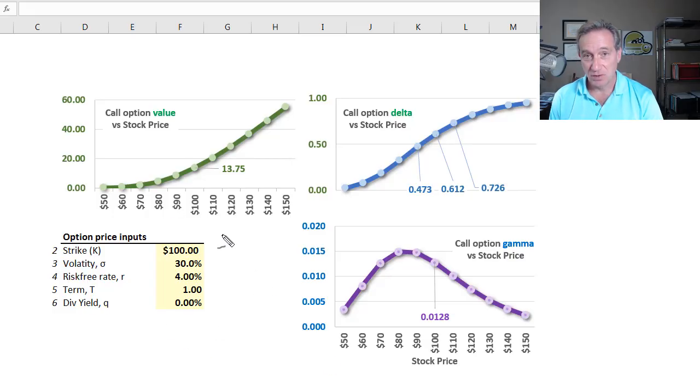In the lower left, I have the input assumptions into my Black-Scholes option pricing model, five of the six, all of them except for the stock price. The strike price is $100 for the call option on this sheet and also for the put option on the next sheet. I assume a volatility of the underlying stock of 30%, risk-free rate 40%, a one-year term, and options on a non-dividend-paying stock. In the upper left here, I plot that very familiar call option value on the y-axis against the stock price on the x-axis.